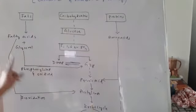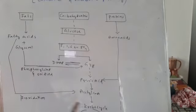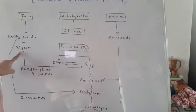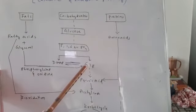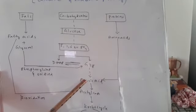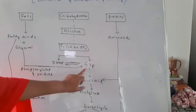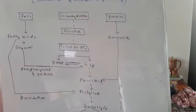Fatty acids first undergo beta-oxidation, convert into acetyl-CoA, and enter into the Krebs cycle — that is how they break and release energy as ATP. Now, how does glycerol enter the respiratory chain? Glycerol undergoes phosphorylation and oxidation, and after these two processes it converts into glyceraldehyde-3-phosphate (G3P). G3P is an intermediate in glycolysis, so it later converts into pyruvic acid, then acetyl-CoA, and then enters the Krebs cycle.